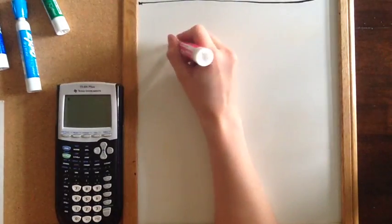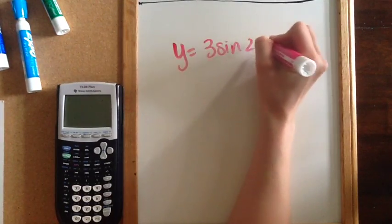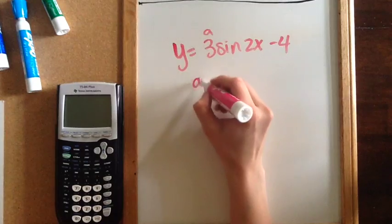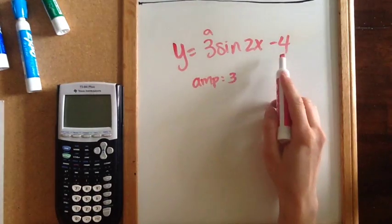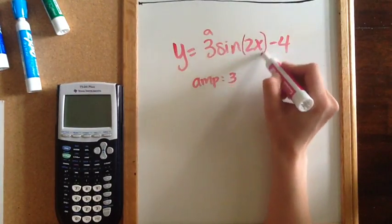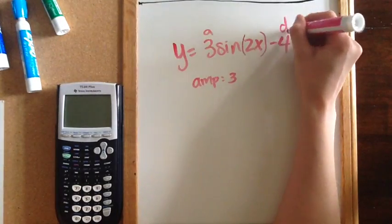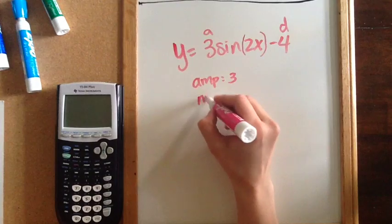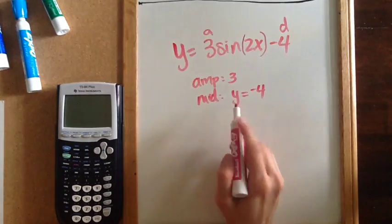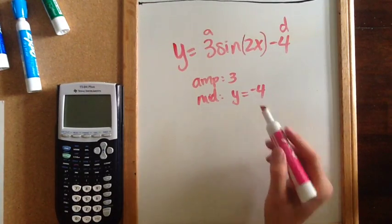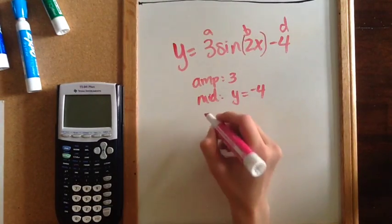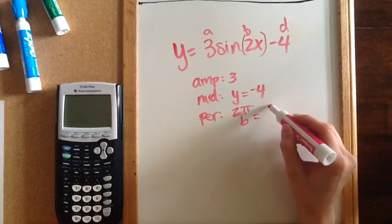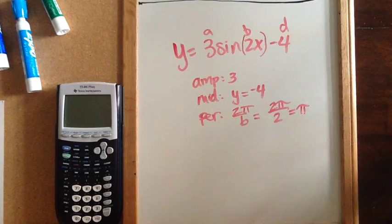For example, if the equation is y equals 3 sine 2x minus 4: the a value is the 3 multiplied out in front, so the amplitude is 3. The d value is the negative 4 being subtracted outside the parentheses, so the midline is y equals negative 4. The b value is the 2 in between the sine and x, and there is no c value. The period is 2 pi divided by 2, which simplifies to pi.